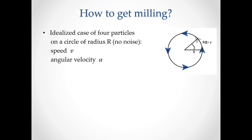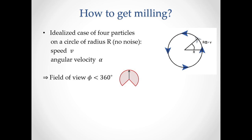So how can we get milling from the Vicsek model? Let's consider an idealized case of four particles on a circle of radius R without any noise, which move at constant speed V and with a certain angular velocity. The first thing we can say is that we actually need a limitation on the field of view. Why? Because if the field of view is complete, as in the original Vicsek model, then the particle will interact with the particle in front and with the particle in back, and these orientations cancel each other out, and therefore this particle will simply continue to move straight. But if we introduce a limitation on the field of view with a blind angle in the back, then this particle will interact only with the particle in front and not anymore with the particle in the back, and therefore will tend to rotate counterclockwise.